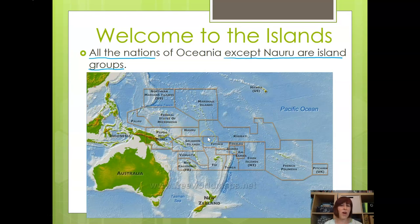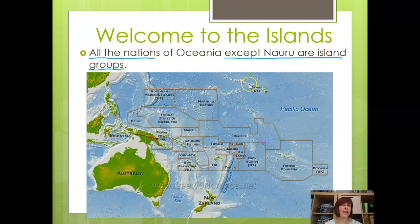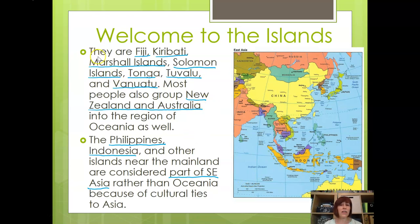There are many small nations in Oceania, ranging from the Marshall Islands to Fiji, French Polynesia, and the Federated States of Micronesia. Hawaii is also located in the Pacific and is part of this Pacific Island region. Countries you need to know that are island groups include Fiji, Kiribati, the Marshall Islands, the Solomon Islands, Tonga, Tuvalu, and Vanuatu. Most people also group New Zealand and Australia into this Oceania region. Australia is a continent in and of itself, but is usually included in this region.